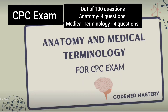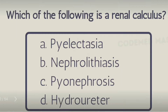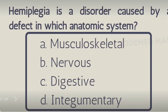Which of the following is a renal calculus? Option A: biolactisia, Option B: nephrolithiasis, Option C: pionephrosis, Option D: hydro ureter. The right answer is Option B, nephrolithiasis. Here, 'nephro' means kidney, that is renal, and 'lithiasis' means condition of stone.